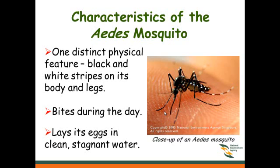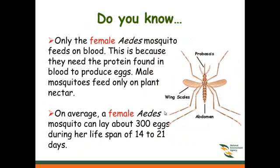It bites during the daytime and lays its eggs in clean, stagnant water. Did you know that only female Aedes mosquitoes feed on blood? This is because they need the protein found in blood to produce eggs. Male mosquitoes feed only on plant nectar. On average, a female Aedes mosquito can lay about 300 eggs during her lifespan of 14 to 21 days.